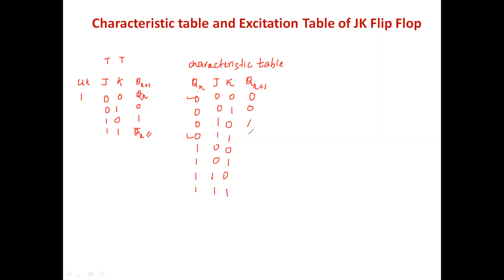Continuing: when J=0, K=0, output is Q(n) — here Q(n) is 1, so output is 1. When J=0, K=1, output is 0. When J=1, K=0, output is 1. When J=1, K=1, output is Q(n) bar — complement of 1 is 0. This completes the characteristic table. Next is the excitation table.